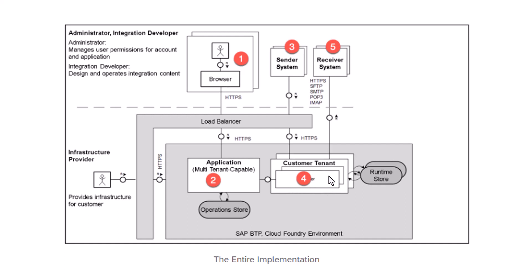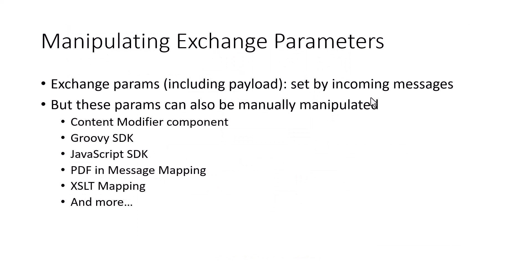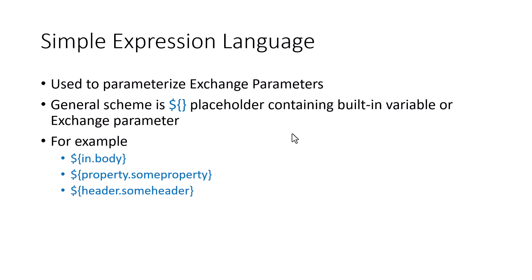The iFlow does its processing steps, and if it has a receiver adapter it can make a call to a receiver system. Based on whether it's in-out or in-only, the message is sent back to the sender. As the message goes through the iFlow processing steps, you can manipulate the message in any number of ways. The incoming payload is provided by the HTTP or SOAP adapter, and you can use various components to change the data. You can also use a simple expression language to retrieve data — for example, to retrieve what's in the body, header, or property using the dollar sign with two curly braces as the placeholder.